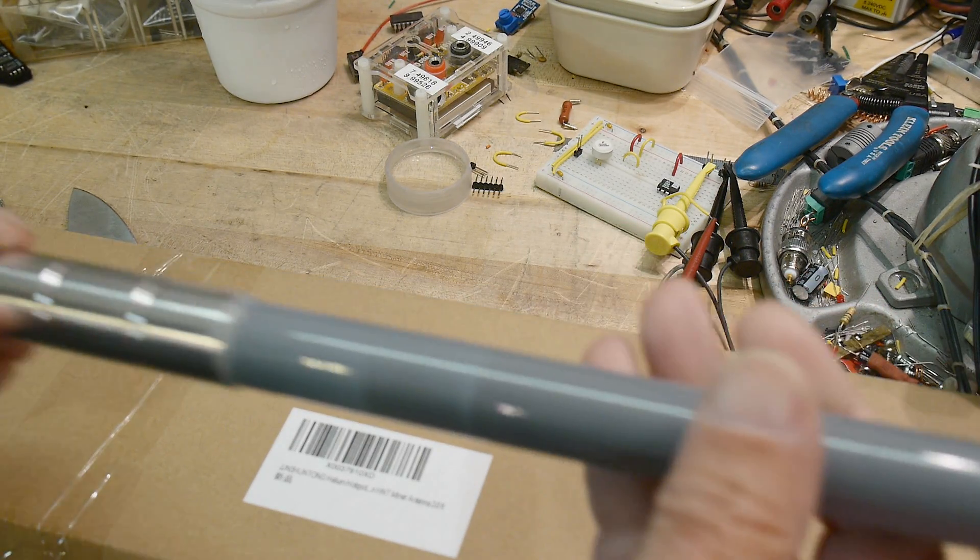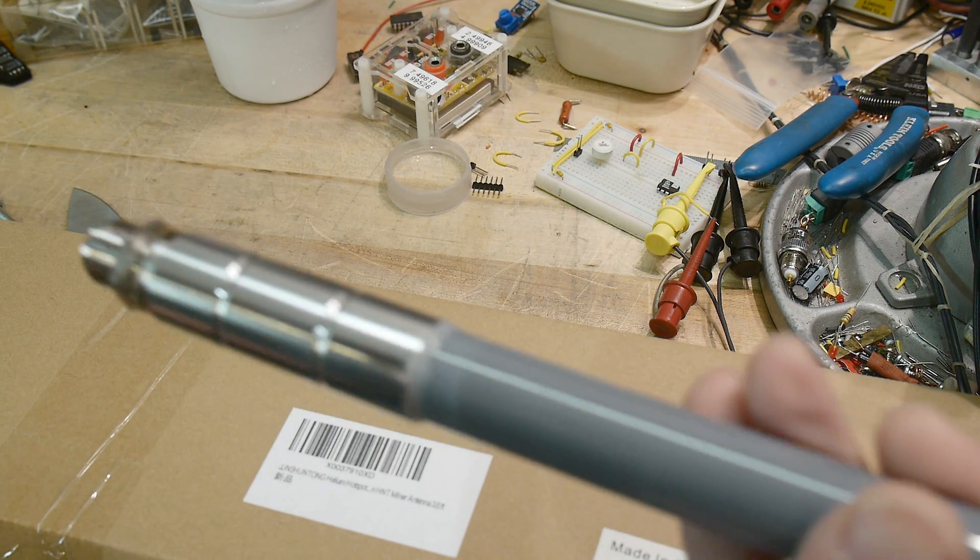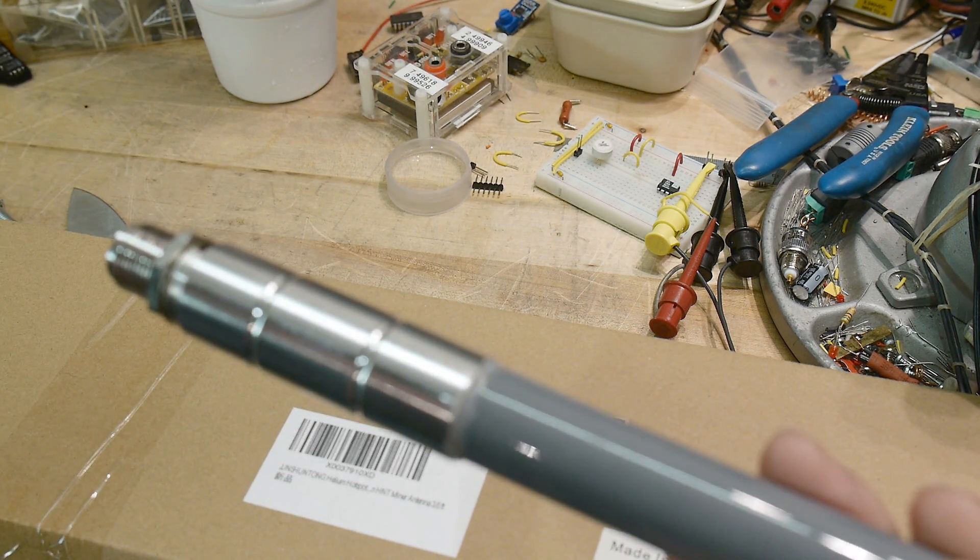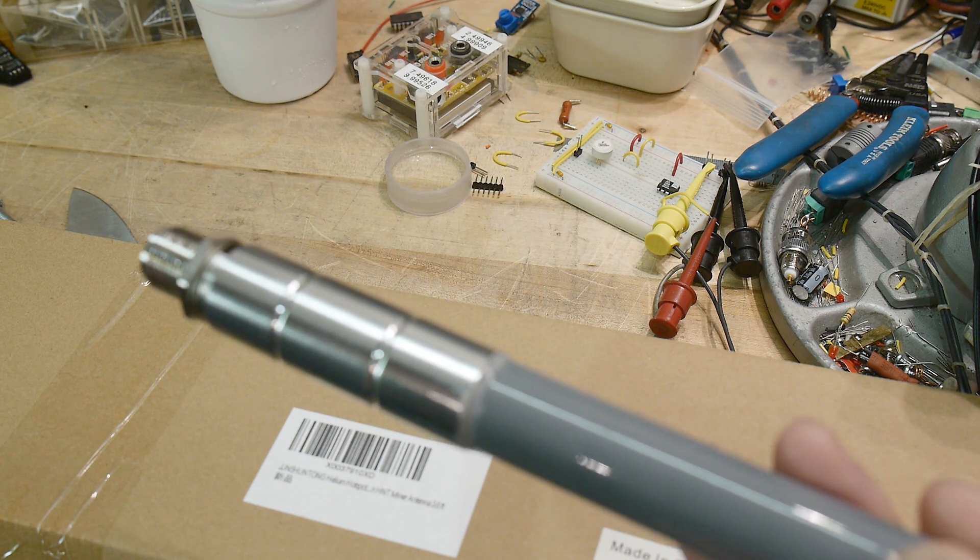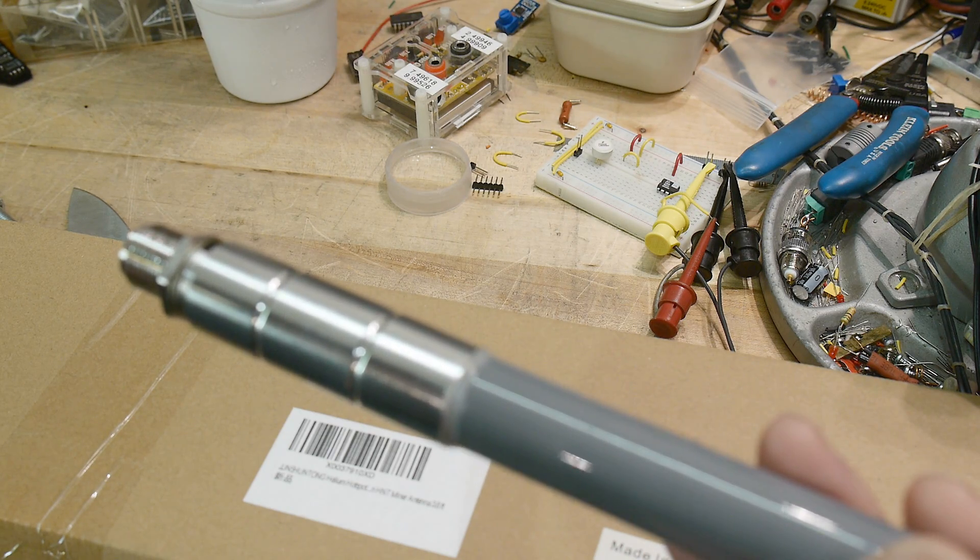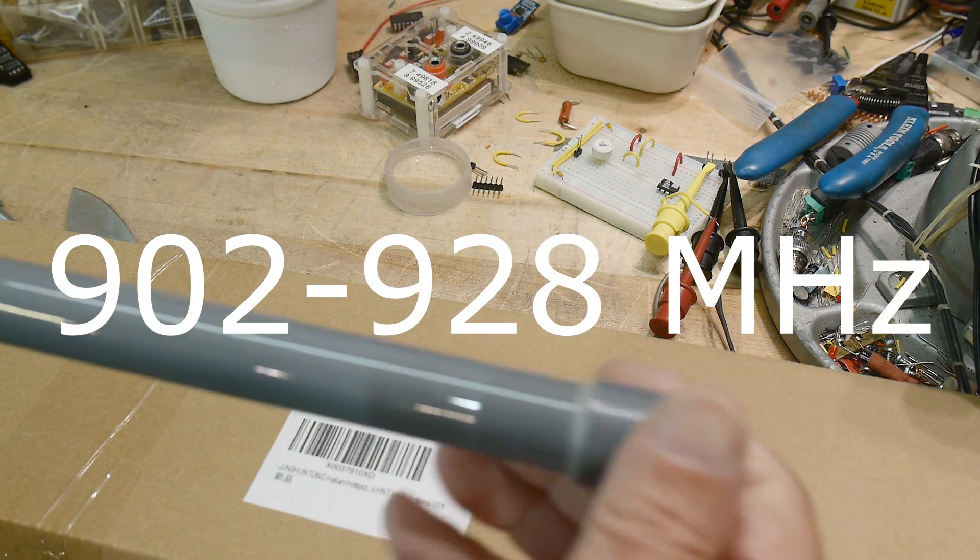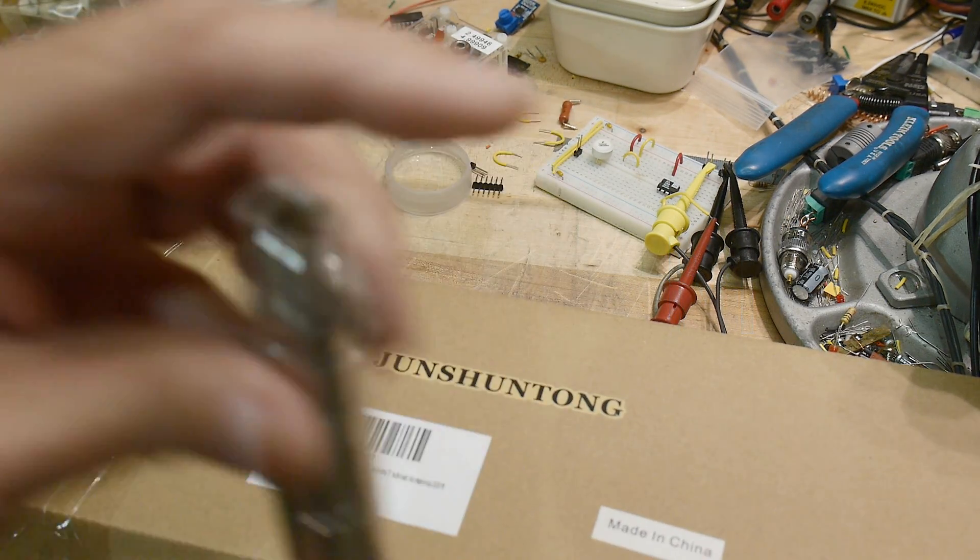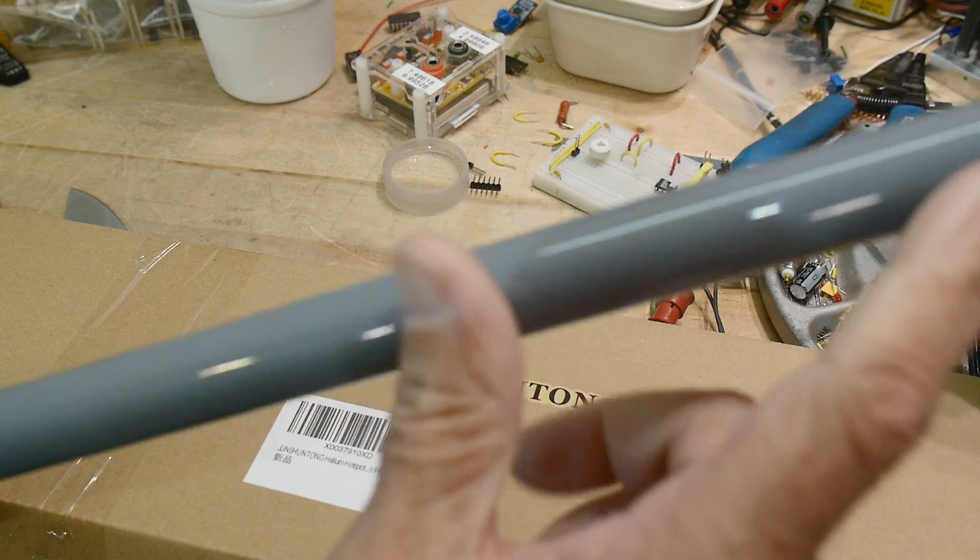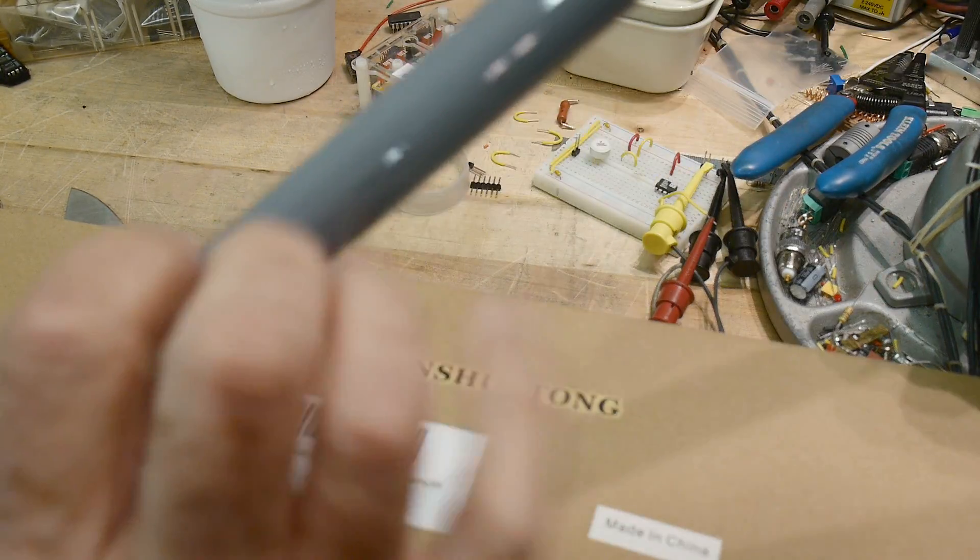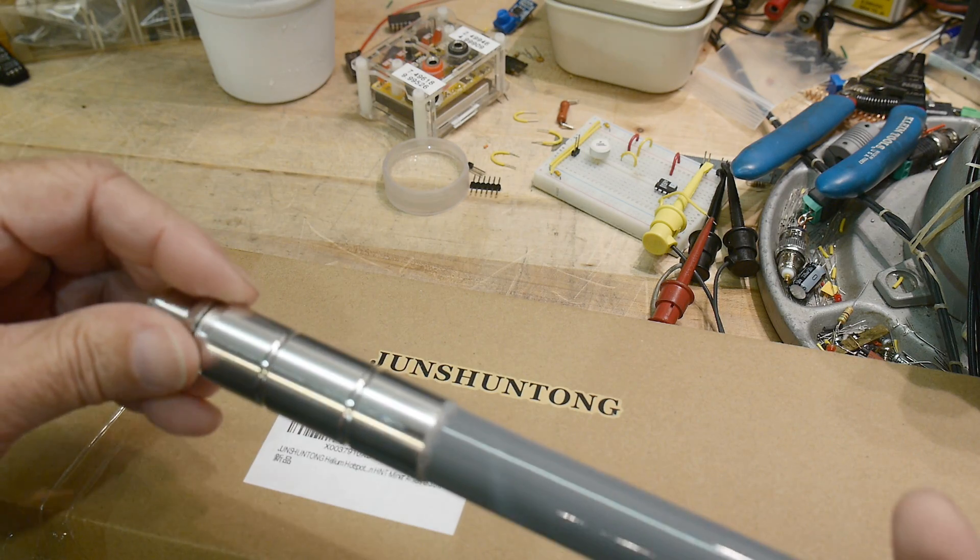900 megahertz is being used for various things - it is part of the licensed bands for ham radio people and part of the LoRa band in North America. They call it 915 megahertz but it goes from like 905 to 928 or something like that. This is a coaxial monopole or coaxial vertical with multiple sections that are resonating - it's a coaxial phased array and it has some gain associated with it.